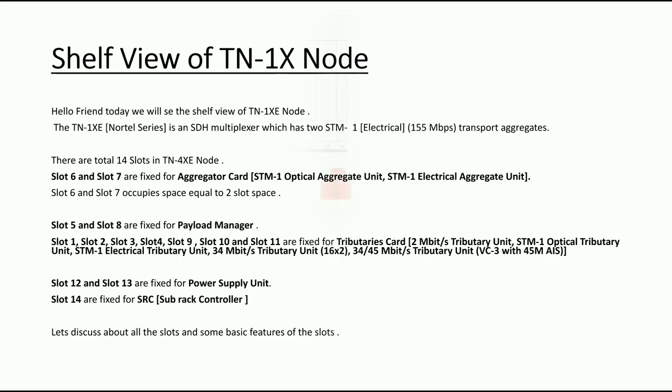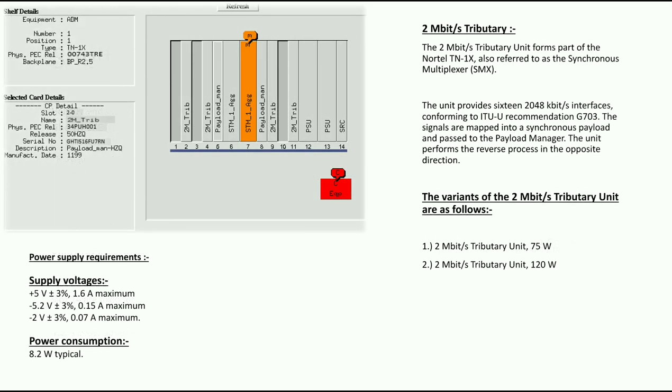This is the shelf view of the TN-1XE node. On the left-hand side is the shelf detail section, showing the ADM type (TN-1X), pack code, backplane, etc. Below the shelf details are the selected card details. When we select any card, it shows the slot, card name, pack code, serial number, description, and manufacture date.